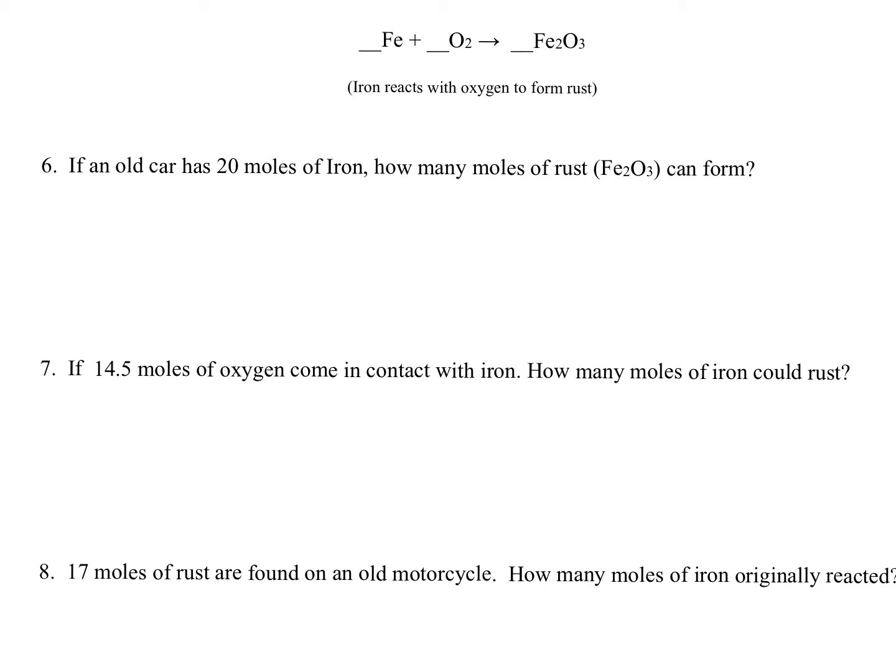Since we have two oxygens on the reactant side and three on the product, we're going to need to make that an even number of six. So two times three oxygen will give me six, three times two oxygens will give me six, but that two times two iron is going to give me four iron. So I better put a four there.